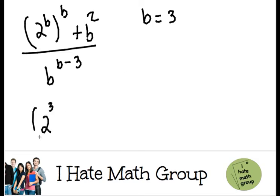2, 3, and then another 3 here, plus 3 squared over 3, and then 3 minus 3. So let's see what we get.